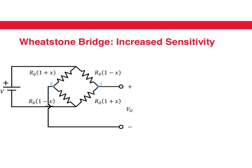Instead of using two strain gauges, we can use four strain gauges so that all the resistances in the Wheatstone bridge are strain gauges. This increases the sensitivity of the measurement. It would be an interesting exercise to determine what happens if each of these resistances also has a temperature dependence (1 plus Y) — does the temperature dependence cancel or not?